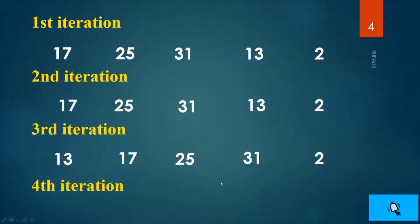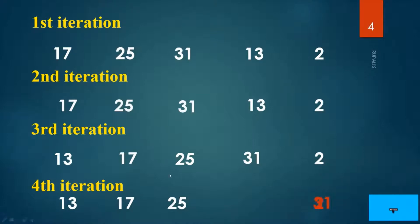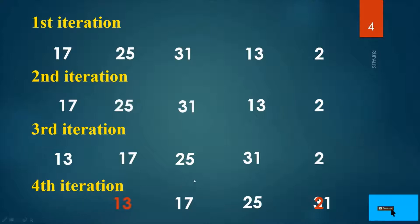In the fourth iteration, temp is 2. Compare 2 with 31 — 31 is greater, so shift. Compare 2 with 25 — 25 is greater, so shift. Compare 2 with 17 — 17 is greater, so shift. Compare 2 with 13 — 13 is greater, so shift. Finally, write 2 at the first position. In this way insertion sort works.